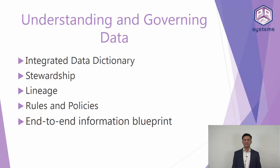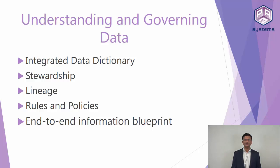Let's talk about lineage. When a CXO looking at a dashboard questions where a particular sales figure came from, the process of tracing the final data back to its source and understanding exactly what transformations produced it is called lineage. A lineage could be business lineage or technical lineage, and both of these are supported in Information Governance Catalog.